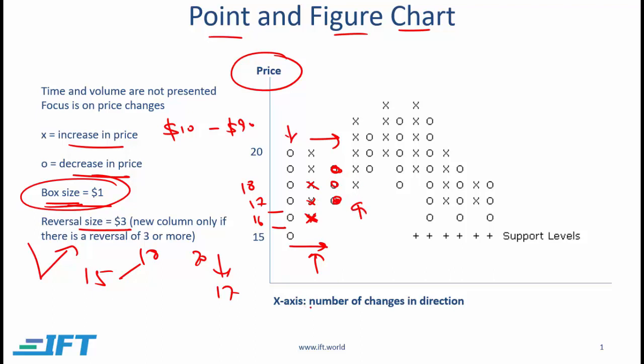So notice that the X axis then really represents the number of changes in direction. This is loosely related to time because changes in direction happen over time. It's just not continuous time over here. So hopefully that clarifies how point and figure charts work.